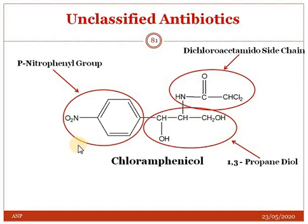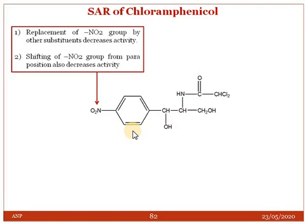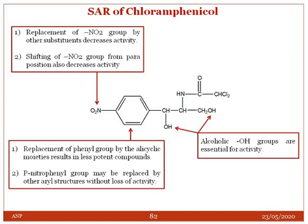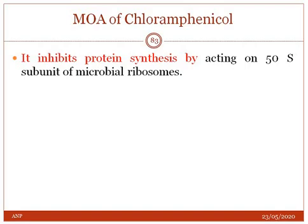Chloramphenicol has two asymmetric carbons in its structure. SAR of chloramphenicol: replacement of the NO2 group by other substituents decreases activity; shifting the NO2 group from the para position also decreases activity; replacement of the phenyl group by alicyclic moieties results in less potent compounds; the para-nitrophenyl group may be replaced by other aryl structures without loss of activity; alcoholic OH groups are essential for activity; and other dihalo derivatives of the side chain are important.